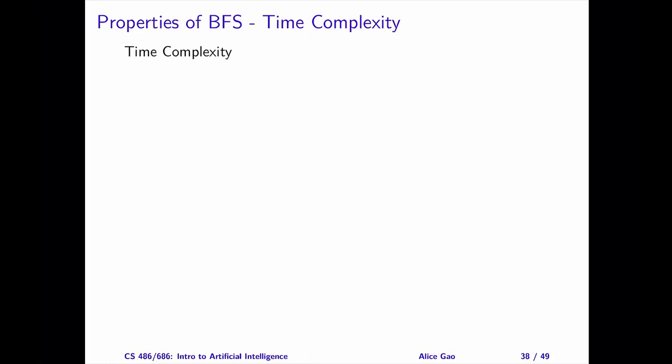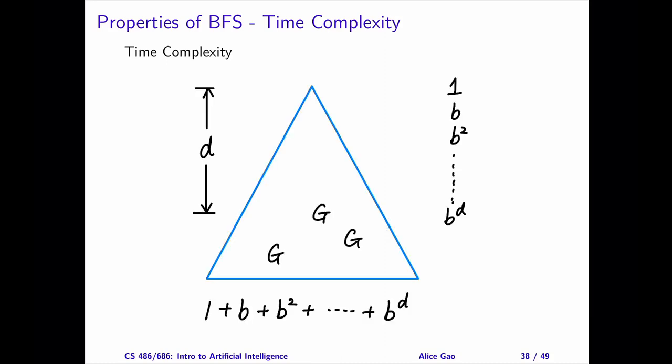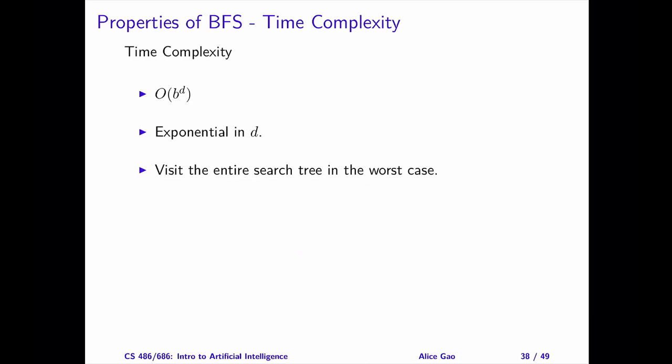What about time complexity? How many nodes does BFS need to visit in the worst case? In the worst case, BFS will visit all the nodes up to and including depth D, and terminates at depth D. Therefore, the time complexity is dominated by the size of level D. The total number of nodes at level D is B to the power of D. So, the time complexity is O of B to the power of D. This is exponential in D.